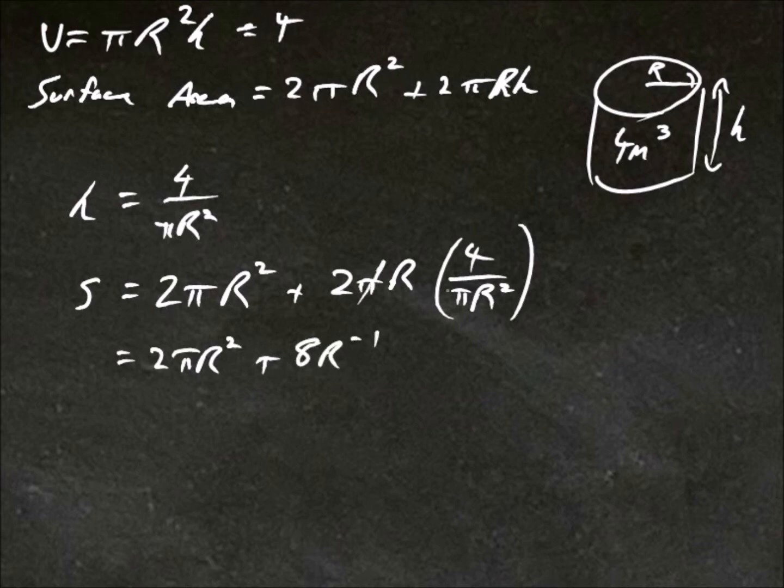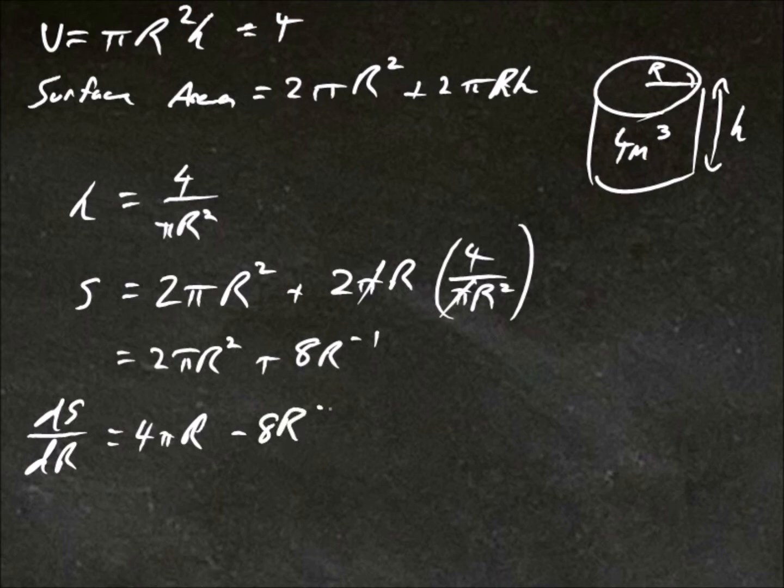Because the pi's cancel, and you've got 2 times 4 and r to the negative 1. Now if we differentiate this with respect to r, so ds dr, this would be 4 pi r minus 8 r to negative 2.